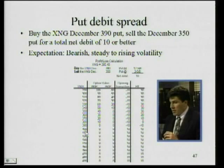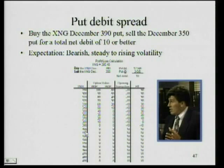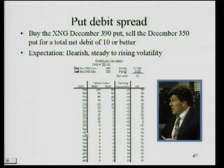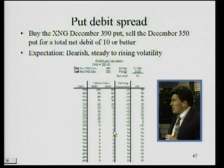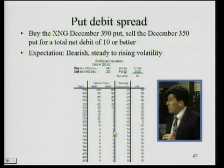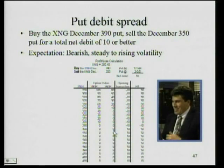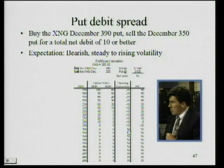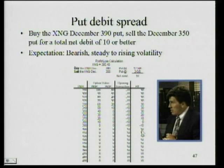Once we get above 400, we are not going to exercise our right to put it into somebody's hands at 390, because that means we'd have to go out and buy it for 400 and then sell it for 390 — so it's worthless. And nobody in their right mind is going to go out and buy it for 400 to put it into our hands at 350. So the options are worthless and there's a minus 10 from the initial transaction.